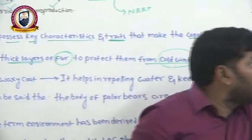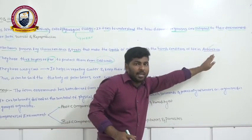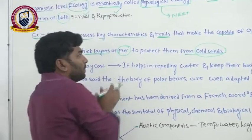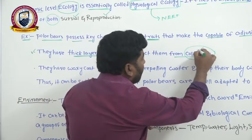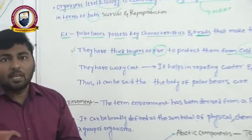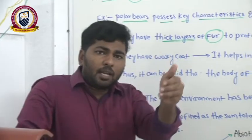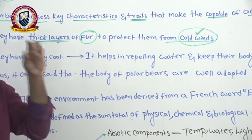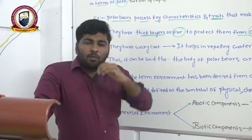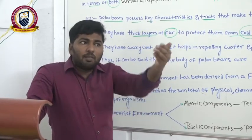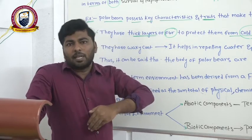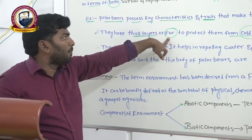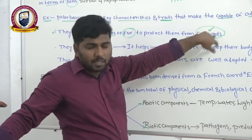This thick fur acts as an insulator — just like a thermos flask, which does not allow the heat inside to escape and does not allow outside cold to enter. Similarly, the thick layer of skin and fur helps the polar bear protect itself from cold weather and maintain body warmth.